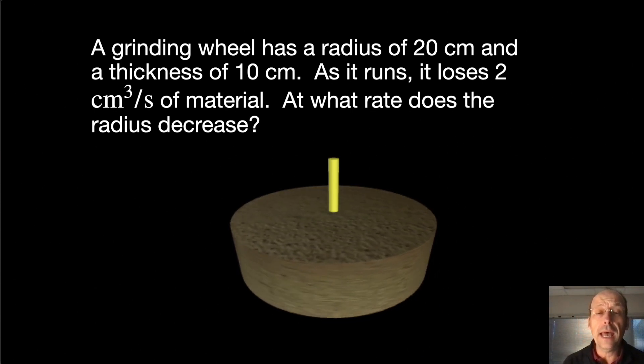So it says a grinding wheel has a radius of 20 centimeters and a thickness of 10 centimeters, so it's a cylinder. As it runs, it loses 2 cubic centimeters per second of material. I made these numbers up. At what rate does the radius decrease? So you can see a lot of problems like this, but here it's a word problem. It's a calculus word problem. And when we get a word problem like that, we really want to try to identify things in the thing.